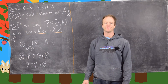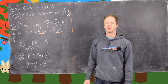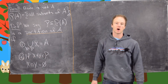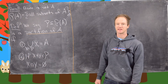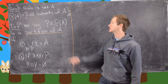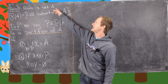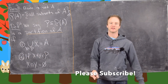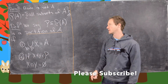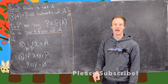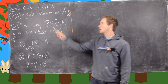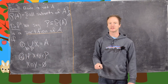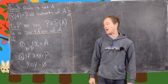In this video we want to look at the notion of a partition of a set. Let's recall what the power set of a given set is first. Given any set A, the power set of A, which we'll denote by the script P of A, is equal to the set containing all subsets of A.